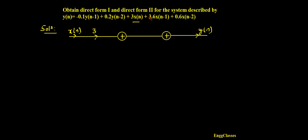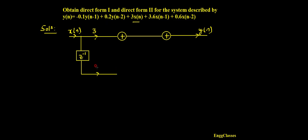Then I need plus 3.6·x(n-1). How do I get x(n-1)? For that I should add one delay element — z⁻¹ — which produces a delay. If I give x(n) to this, after this I am going to get x(n-1). That should get multiplied with the scaling factor, which is 3.6. So here I multiply with 3.6 to get 3.6·x(n-1).